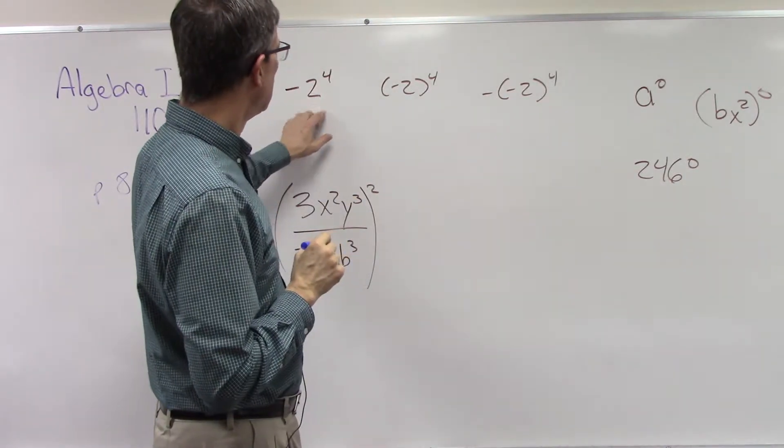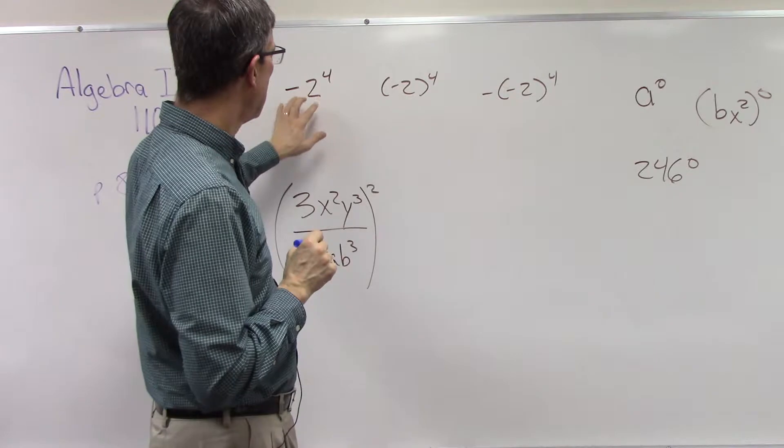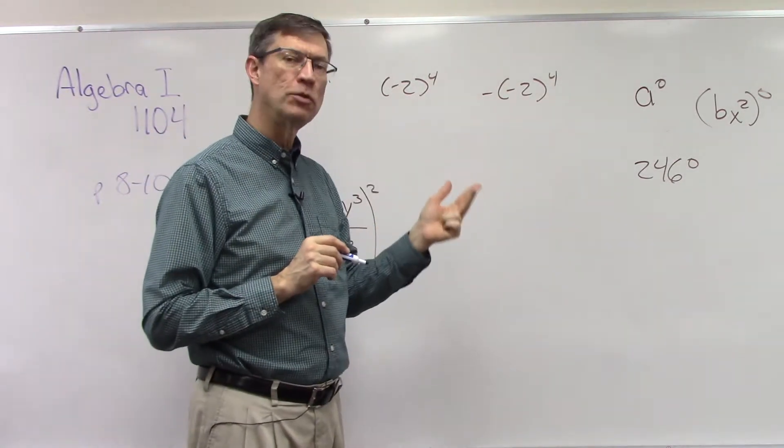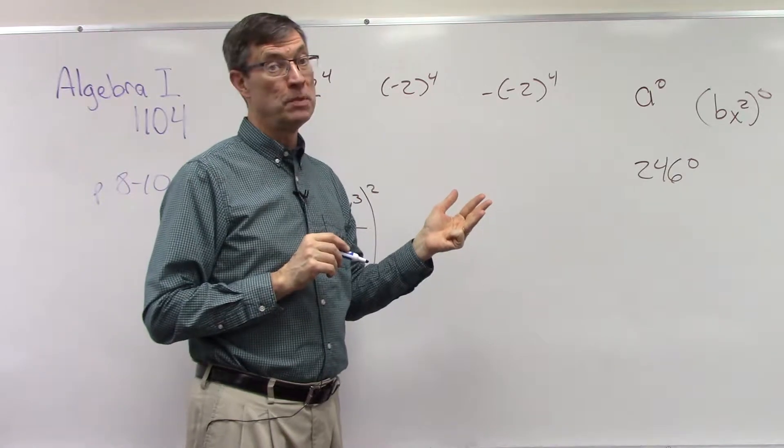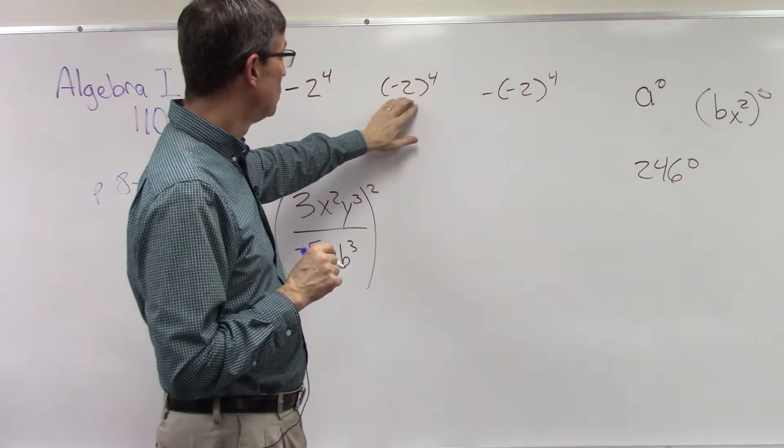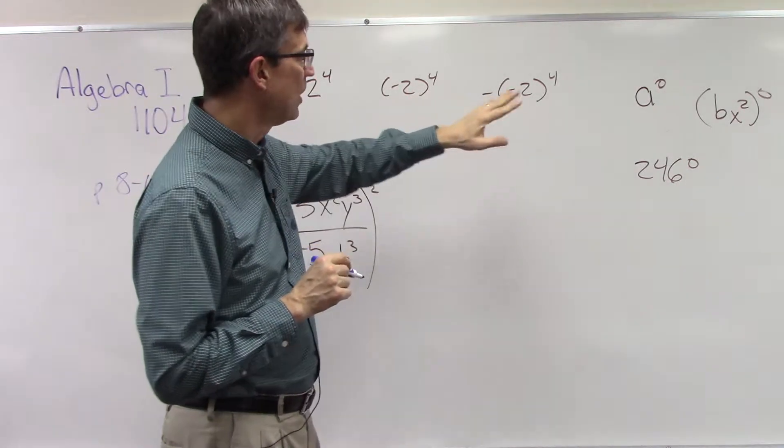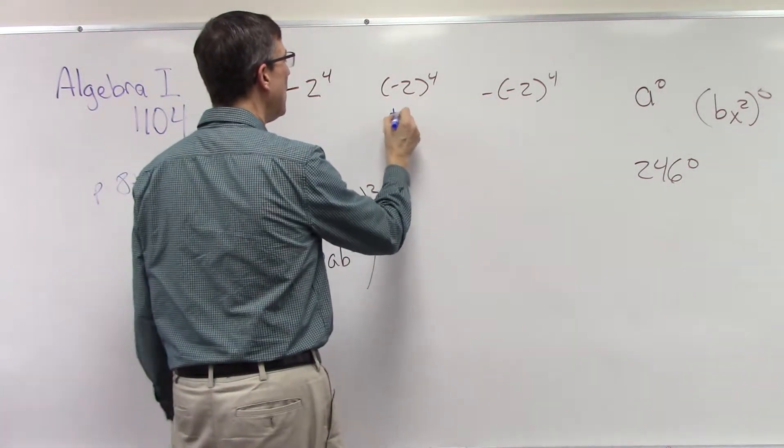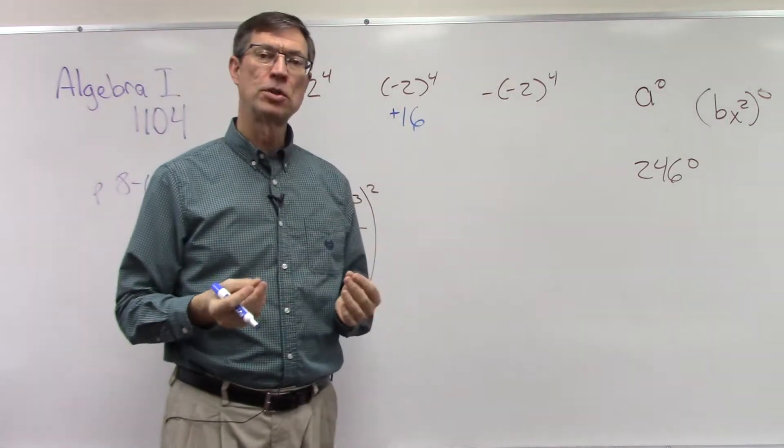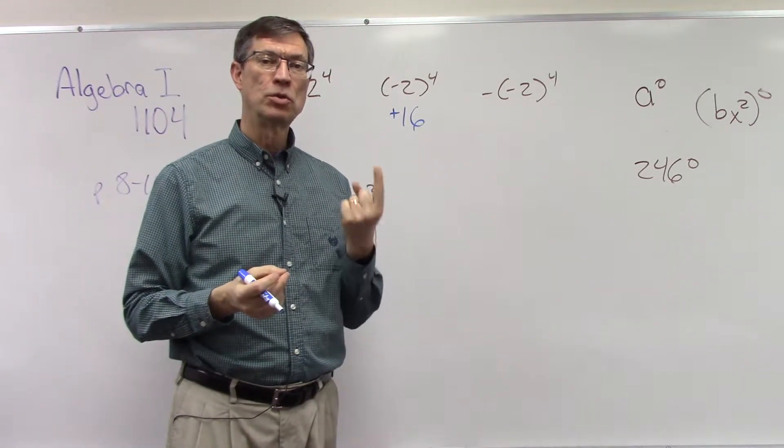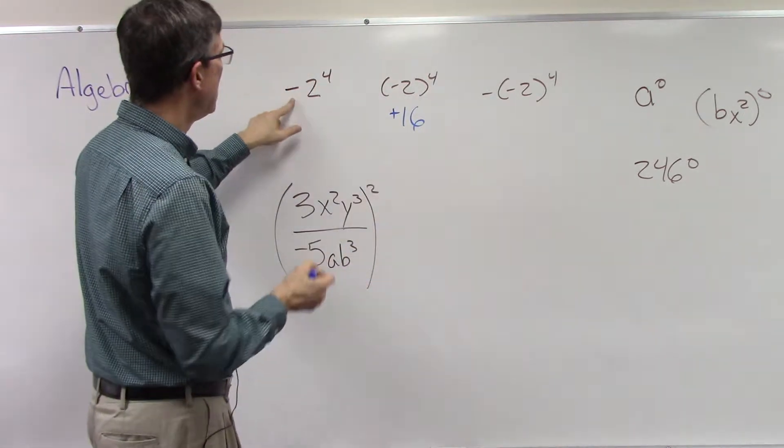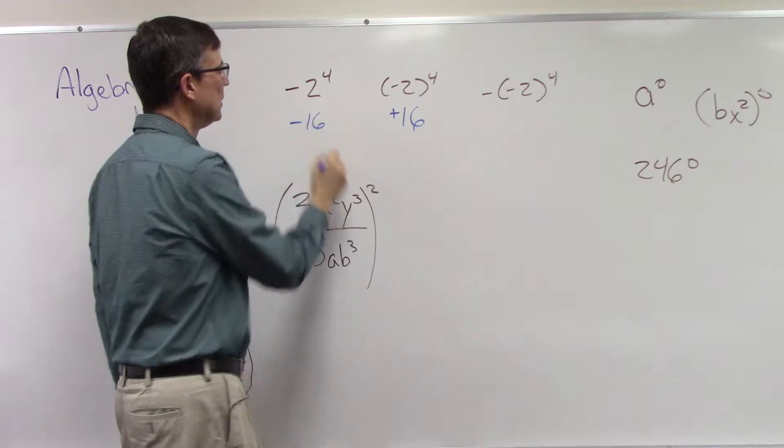So in this case, the 4 is not attached to negative 2. So this is not negative 2 times negative 2 times negative 2 times negative 2, which would be positive 16. This, which is what this is, this is negative 2 times negative 2, 4 times, which would be positive 16. But here, the 4 is only attached to the 2. So it's like 2 times 2 times 2 times 2, which is 16. And then the negative kicks in.